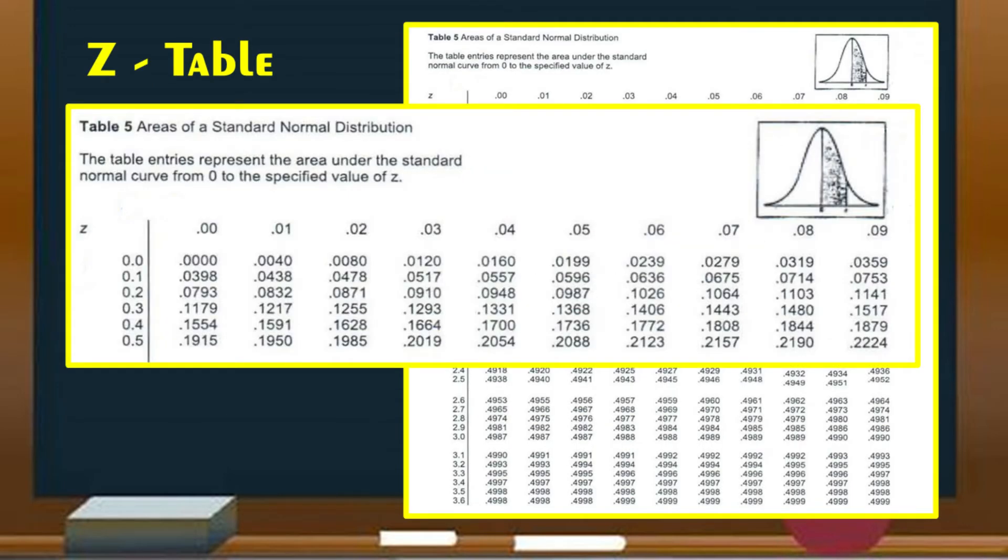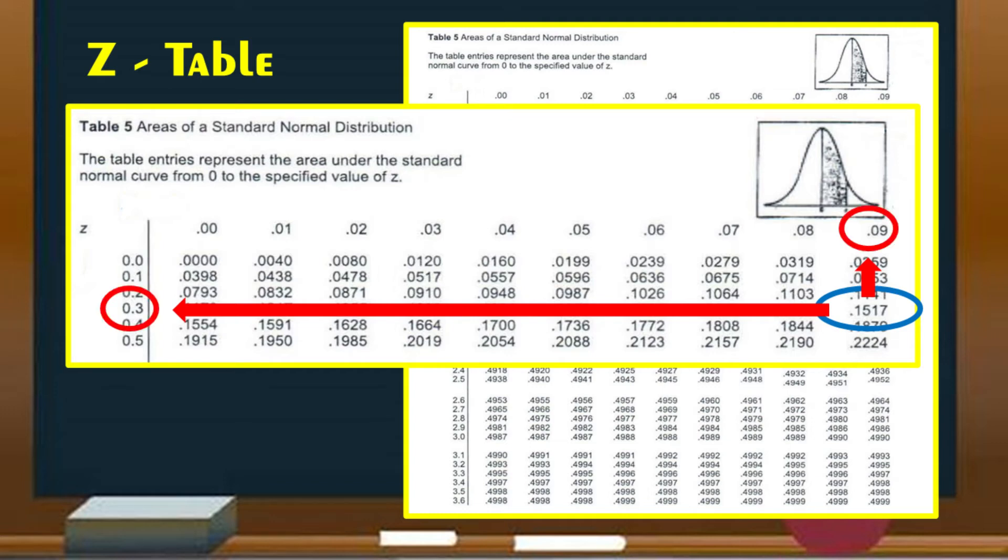Since 0.1500 is not found from the table, then get the nearest value, which is 0.1517. And the Z value that corresponds to 0.1517 is 0.39.